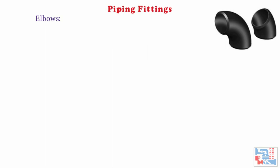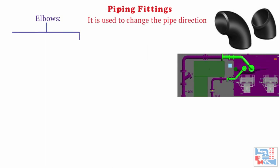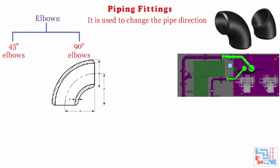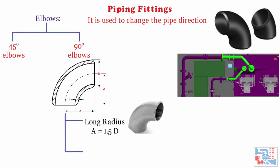Let's quickly move on to our first fitting, which is an elbow. An elbow is used to change the pipe direction at 45 and 90 degrees. 90-degree elbows are available in two types: short radius elbow and long radius elbow. Long radius elbow has a bend radius of 1.5D, where D is the nominal size of pipe. These elbows are represented in piping material specification as LREL. They are used because the pressure drop is less compared to the short radius, and thus pipe rigidity will be reduced.